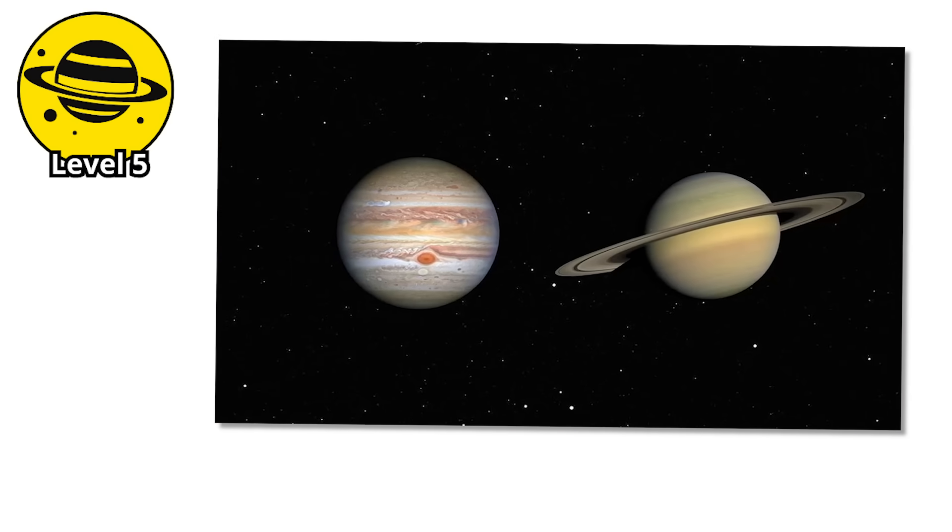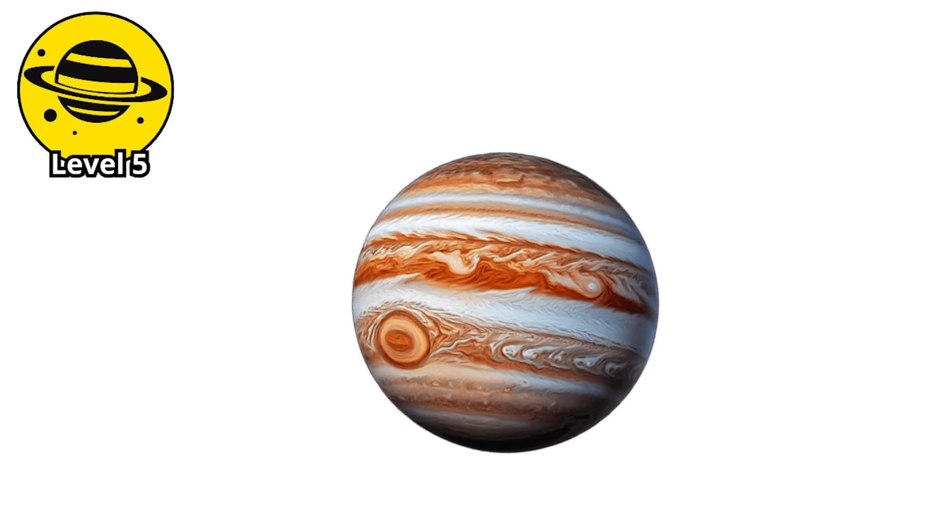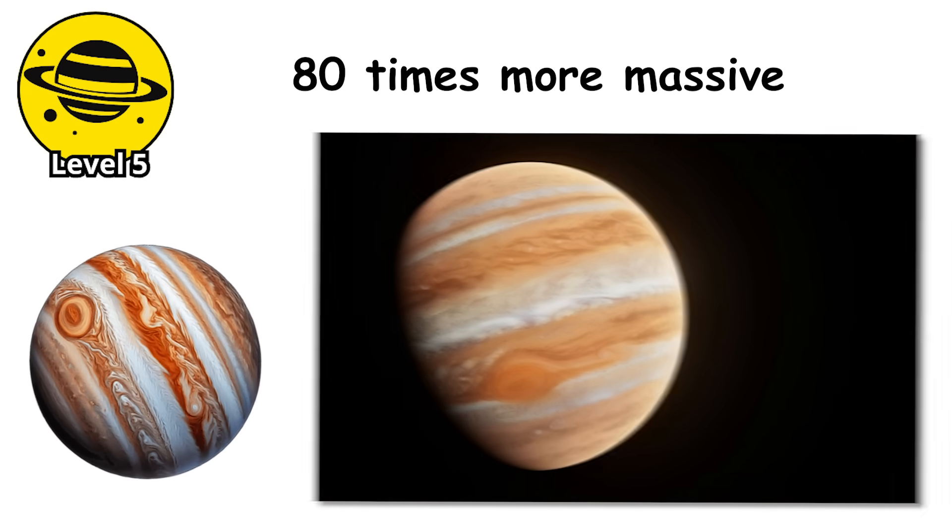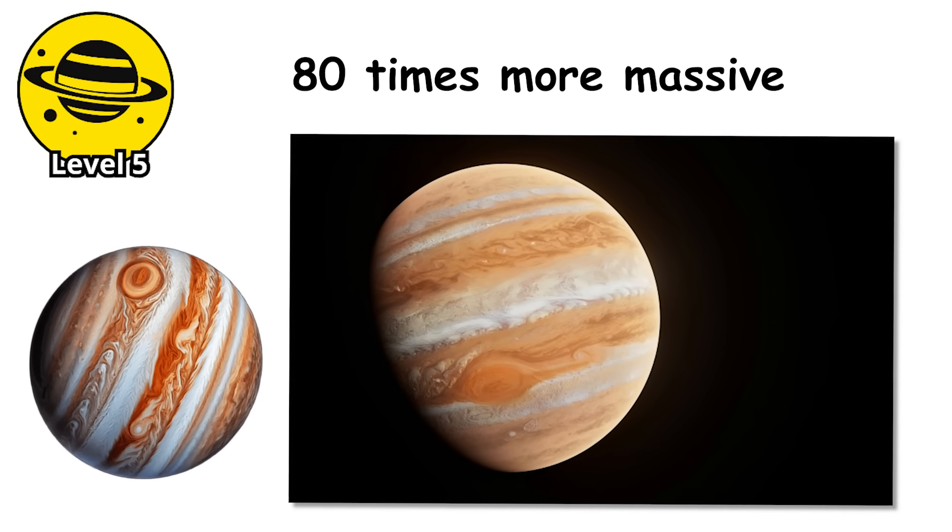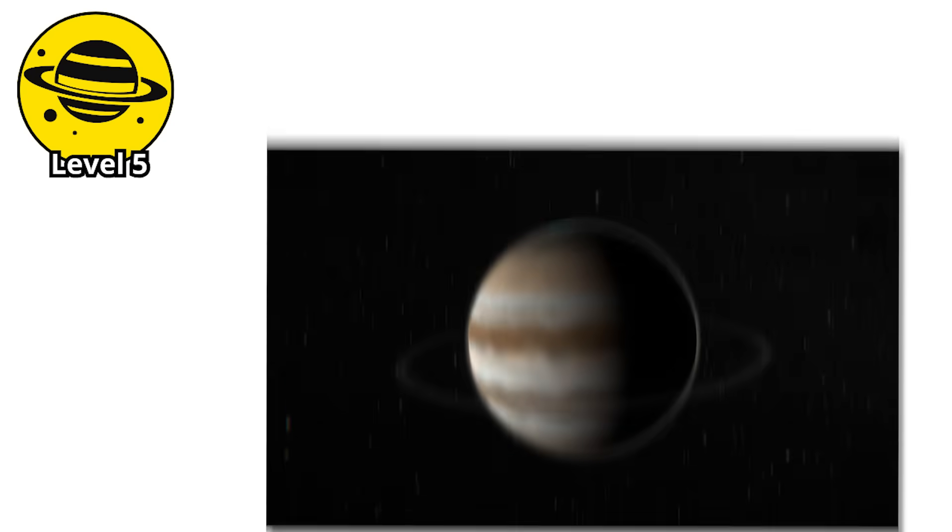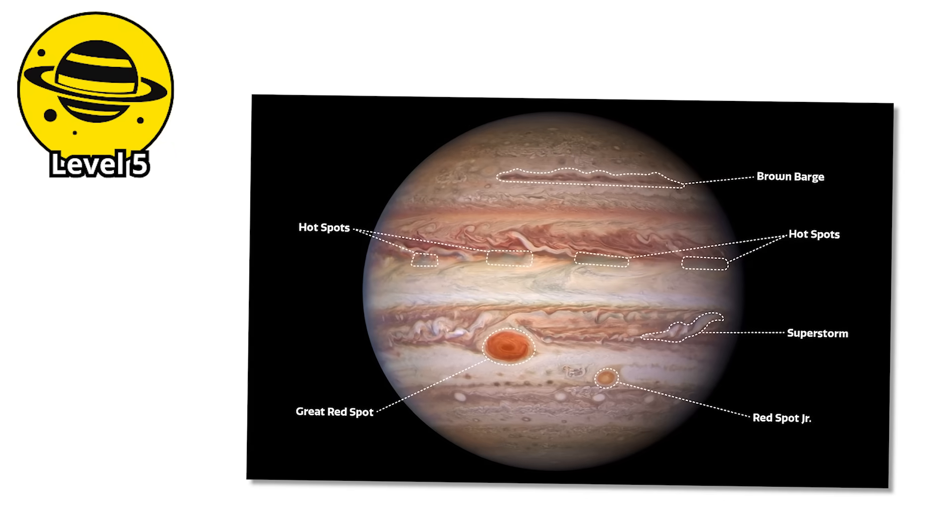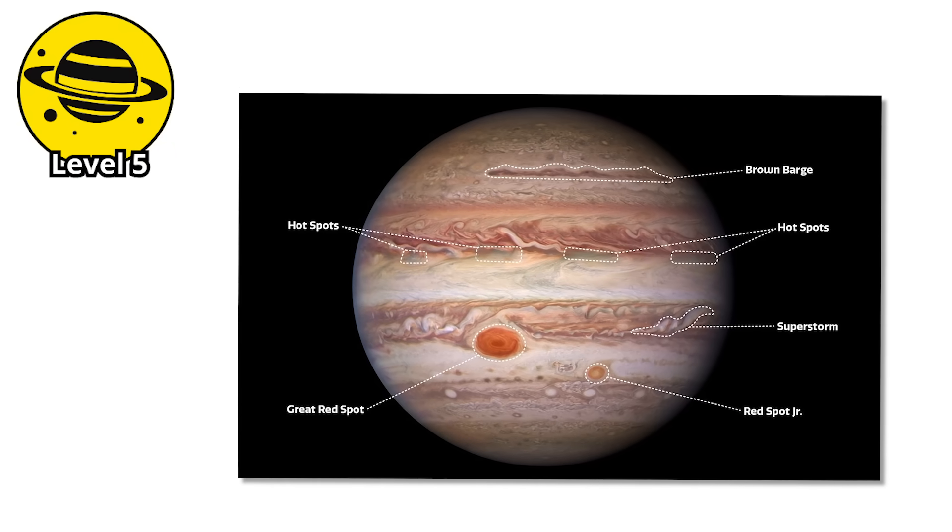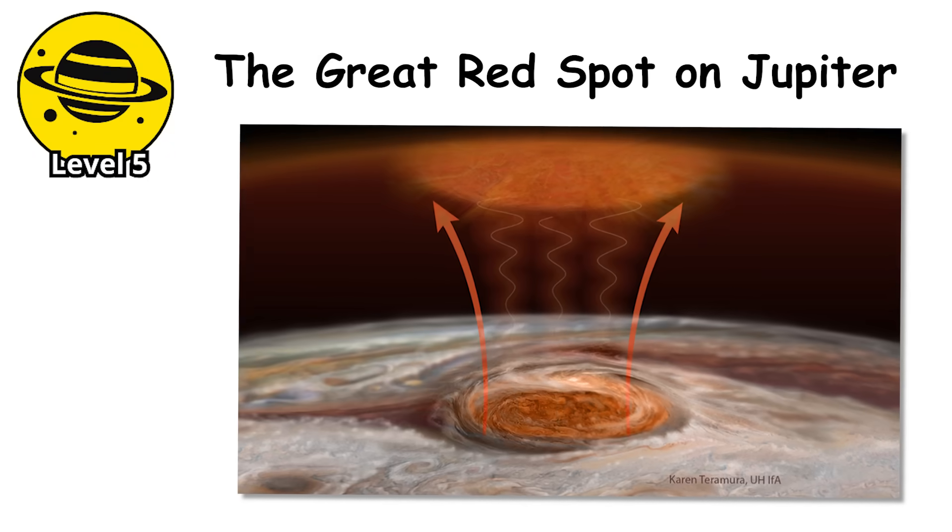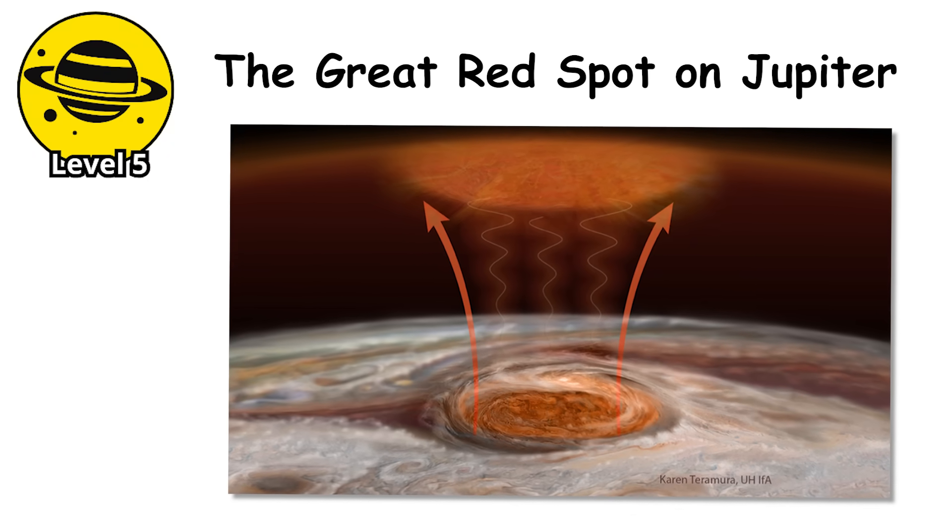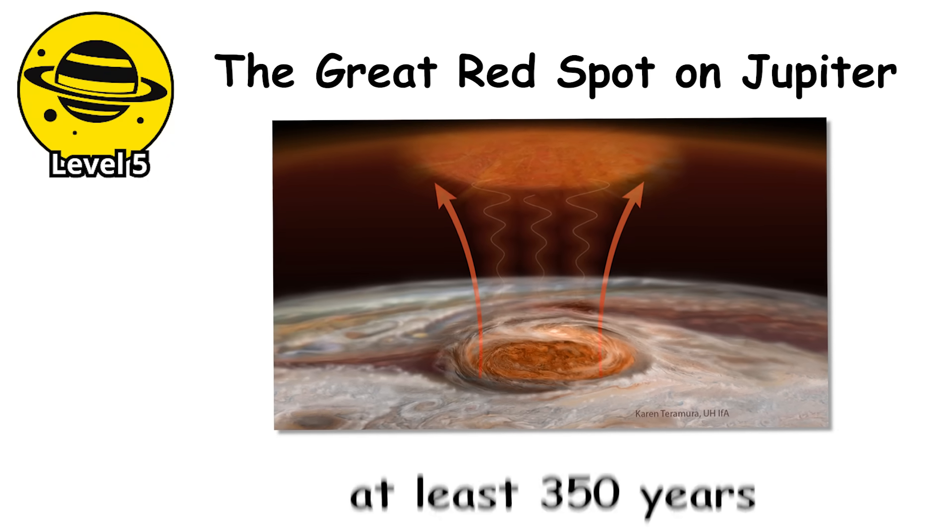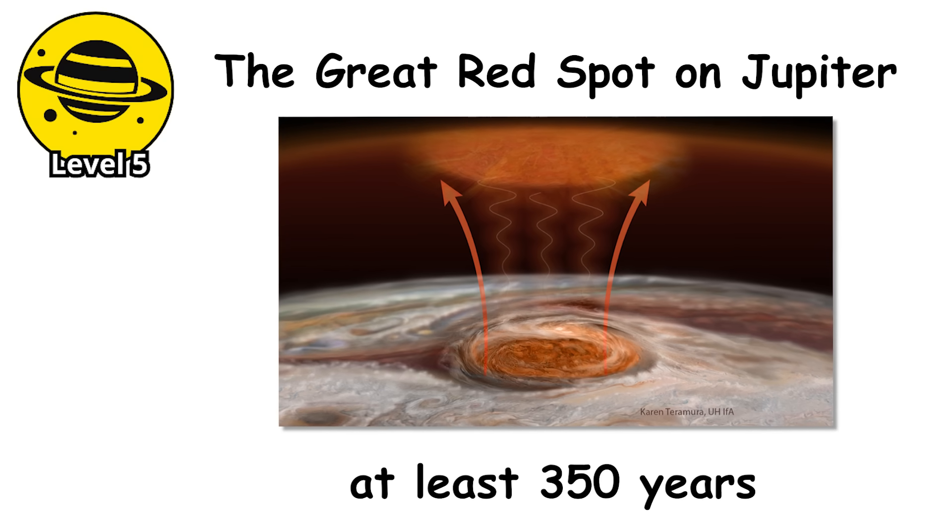These planets are basically failed stars. If Jupiter had been about 80 times more massive, it would have ignited nuclear fusion in its core and become a star itself. As it stands, Jupiter still radiates more heat than it receives from the Sun, slowly contracting and releasing gravitational energy accumulated from its formation. The Great Red Spot on Jupiter is a storm larger than Earth that's been raging for at least 350 years, possibly much longer.